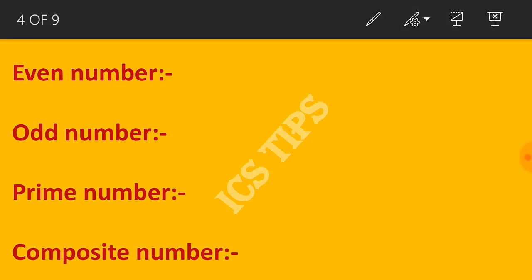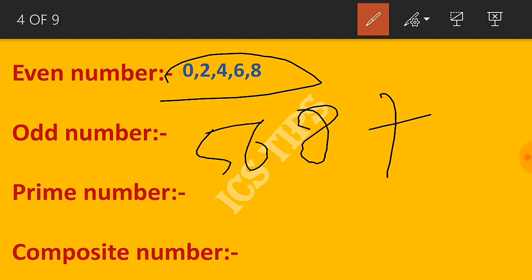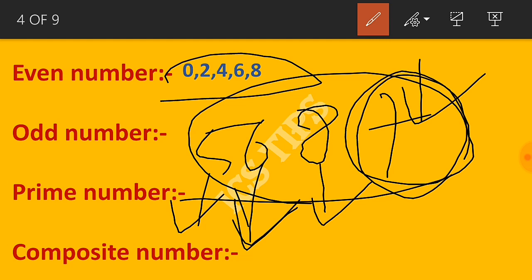Even numbers are numbers where the unit place digit is 0, 2, 4, 6, or 8. The unit place is the rightmost position.